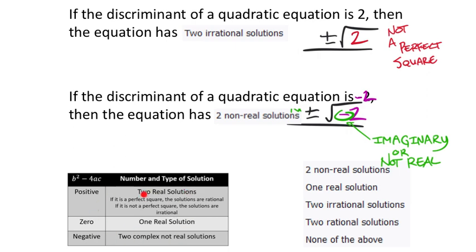You can use this table to figure that out, but I like to just think of it inside the quadratic so I don't have to memorize everything. The discriminant being negative automatically means two non-real solutions. If it's a non-perfect square, then it's two real but irrational solutions. If it were four — a perfect square — then there'd be two rational solutions.